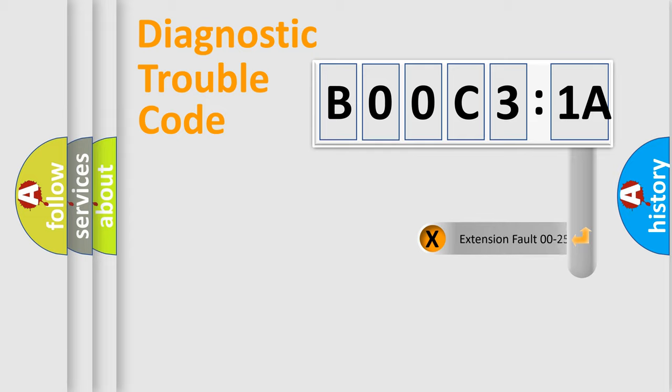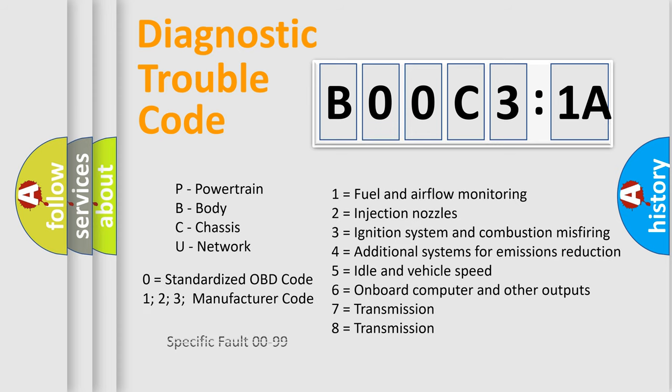The add-on to the error code serves to specify the status in more detail, for example, short to ground. Let's not forget that such a division is valid only if the second character code is expressed by the number zero.